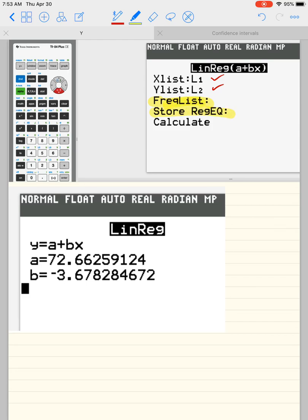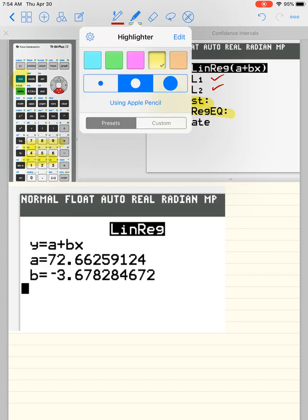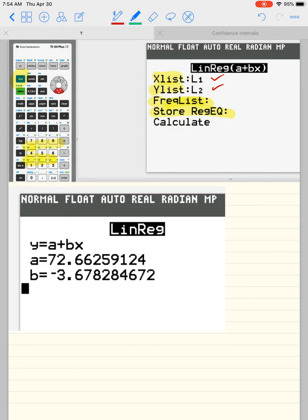Some of you might have something other than list one and list two into your x list and your y list. The way that you get it to be list one or list two, or if you have something in list one and list two you don't want to delete, the way to access any of the lists is if you take a look, anything, these are all blue—list one, list two, list three, list four, list five, and so on. In order to access anything blue, you have to hit the second button. So you just press second, one, you'll get L1. Second, two, you'll get L2, and so on.